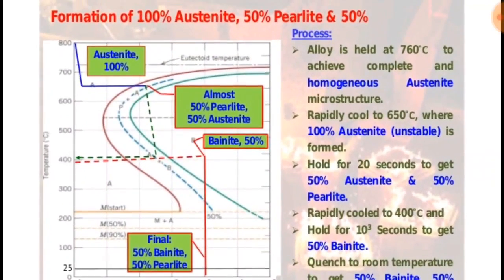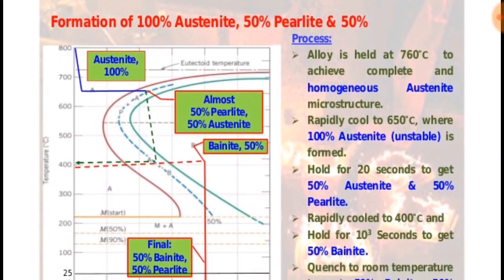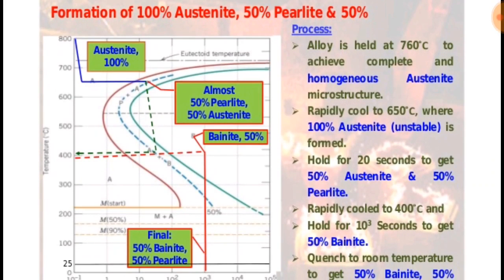Formation of 100% austenite and 50% perlite and 50% bainite. The alloy is held at 760 degrees Celsius to achieve complete and homogenized austenite.